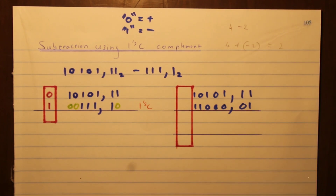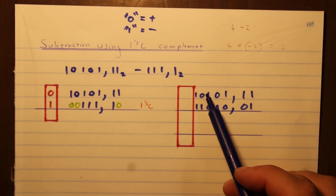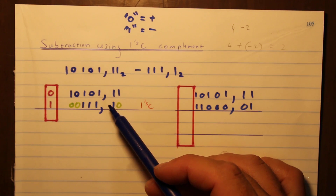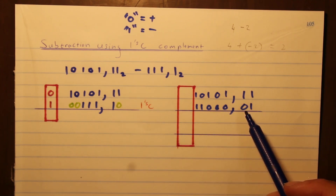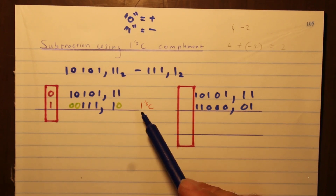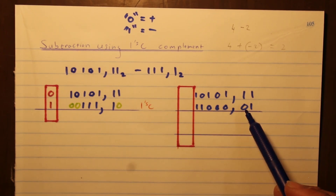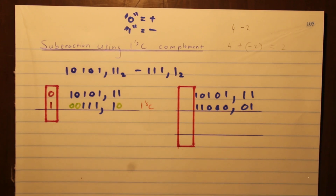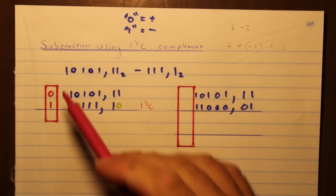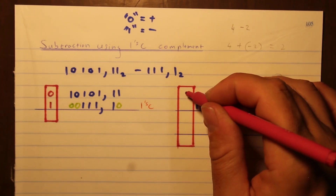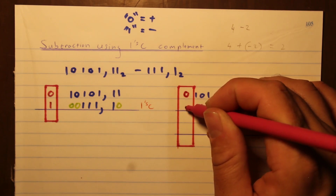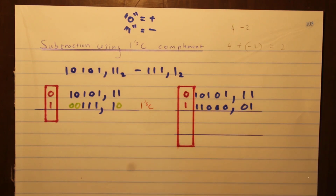The top number is written the same as before because it's positive and we don't complement it. The bottom number has the extra zeros added and has been complemented on this side — I've written 'ones complement' to show that. Then the sign bits are added back, and the sign bits you don't complement — you leave them the same.